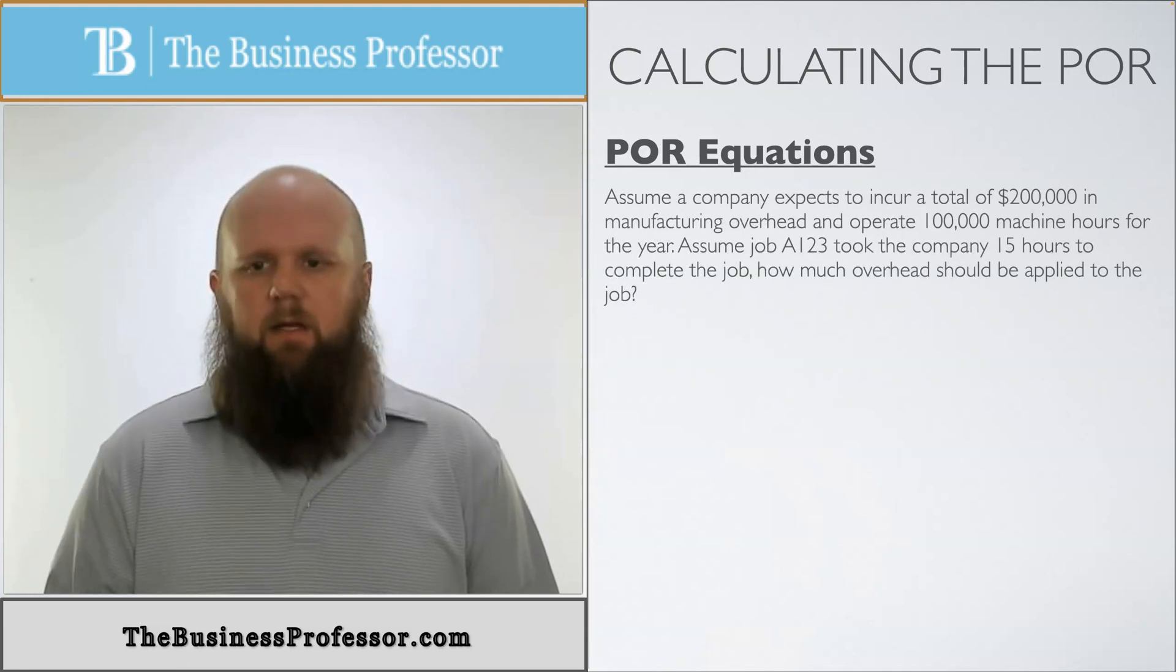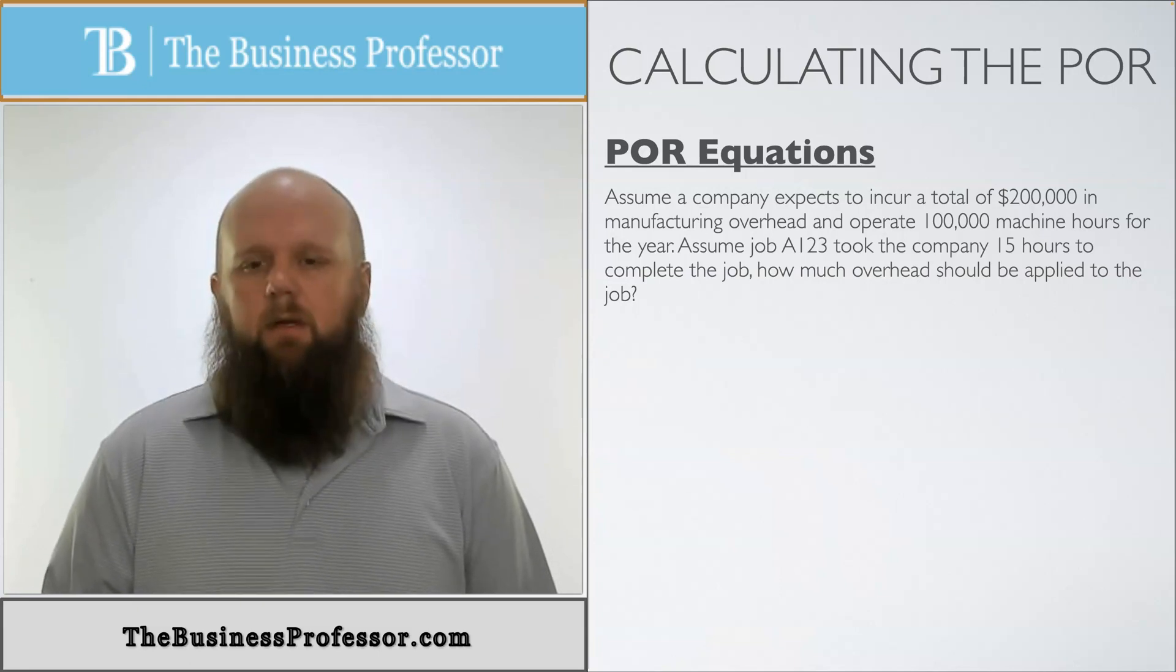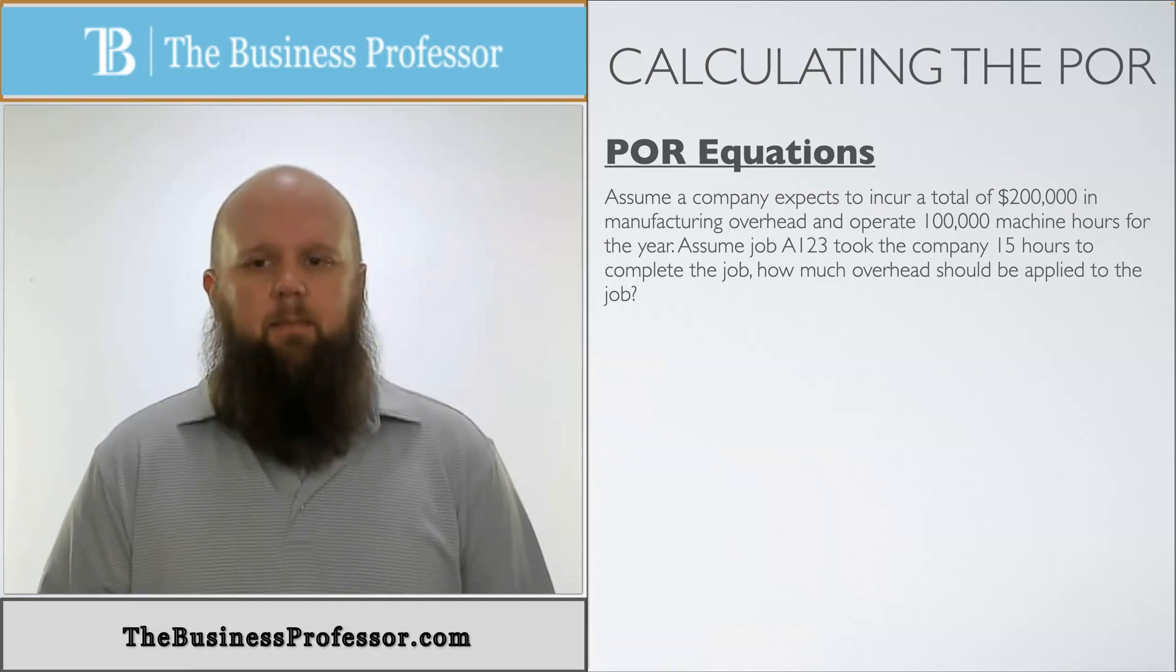Again, same thing, assuming that they expected to incur $200,000, 100,000 machine hours. Assume job A123 took the company 15 hours to complete the job. How much overhead should be applied for that job?